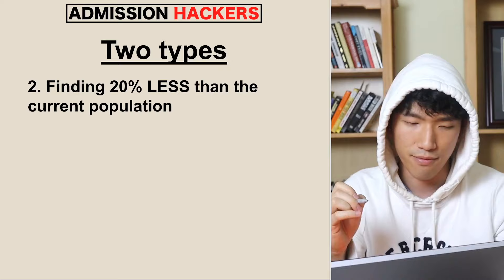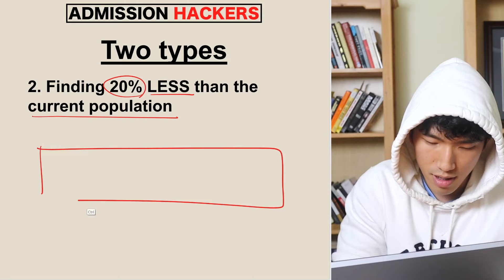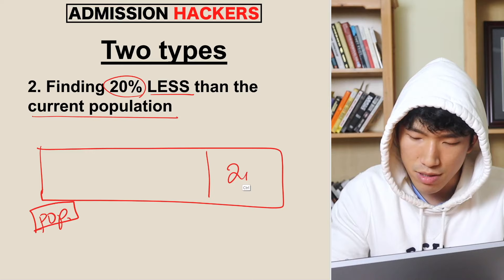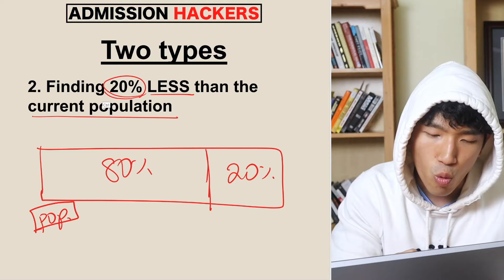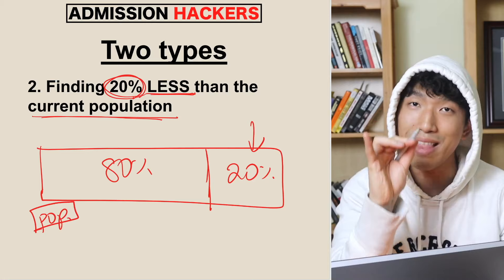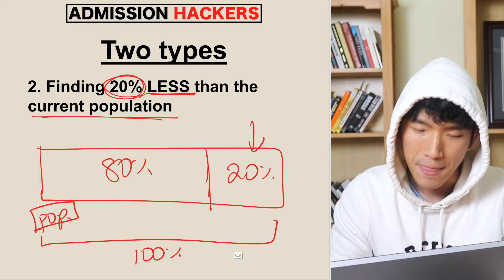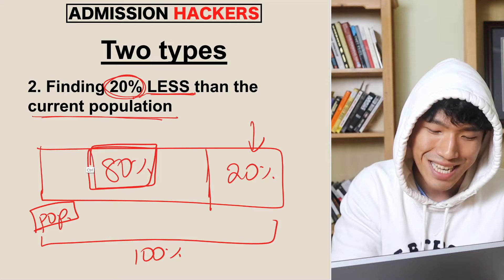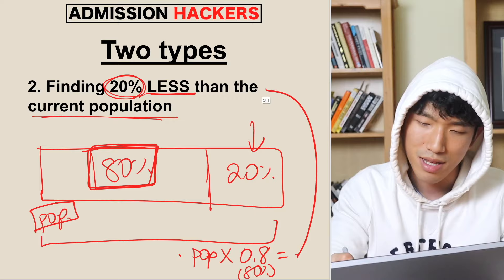Now the second type — this is where it gets a little confusing. Finding 20% less than the current population. Again, the population is this full bar. 20% is here, and 80% is here. If you're looking for 20% less than the current population, you're not looking for the 20% piece — you're looking for something that is 20% less than the current population, which is 100%. So what you're essentially looking for is this 80%. To find it, you multiply the population by 0.8, the decimal version of 80%, and that gives you the value that is 20% less than the population.